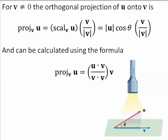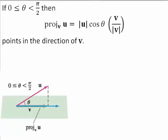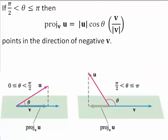The projection of u onto v can be calculated using the formula, and it might be a little easier if you use it directly. Notice that if theta is between 0 and pi over 2, the projection of u onto v will point in the direction of v. If theta is between pi over 2 and pi, the projection of u onto v points in the negative direction of v. Just a reminder: the scalar component of u onto v is a scalar value, while the projection of u onto v is a vector.